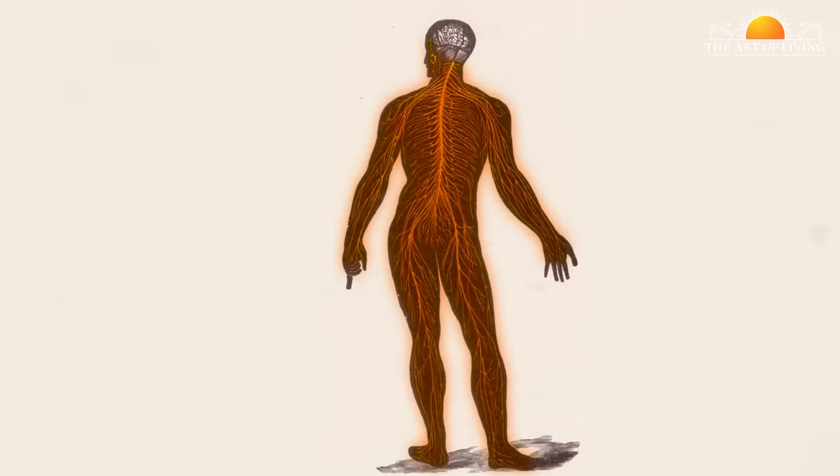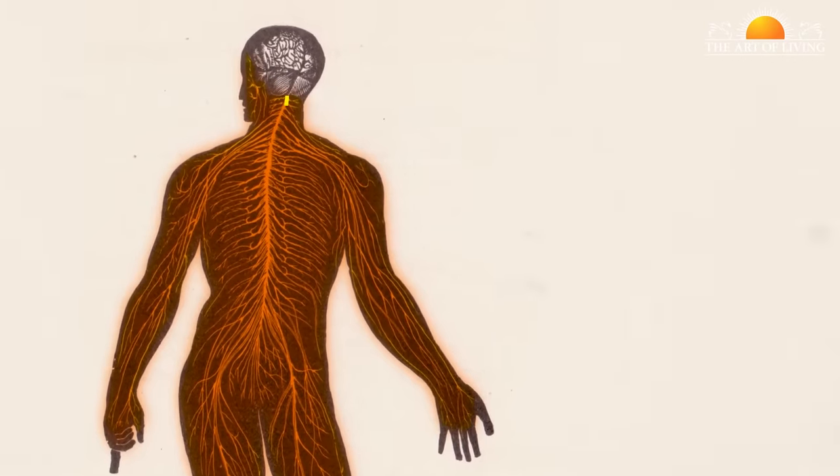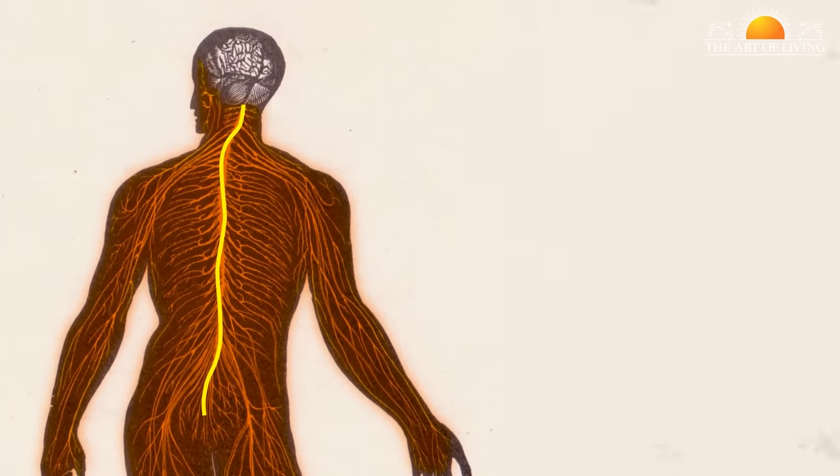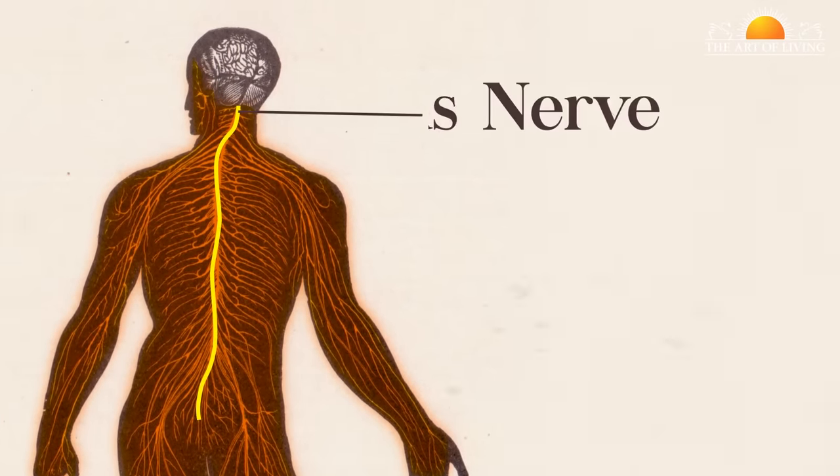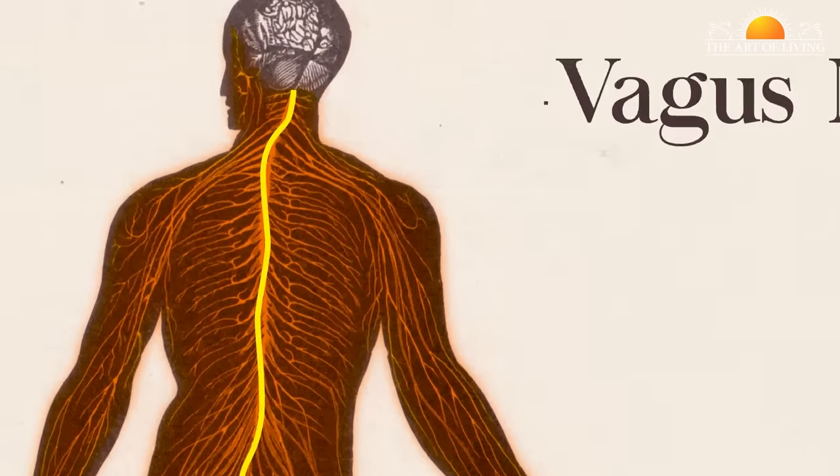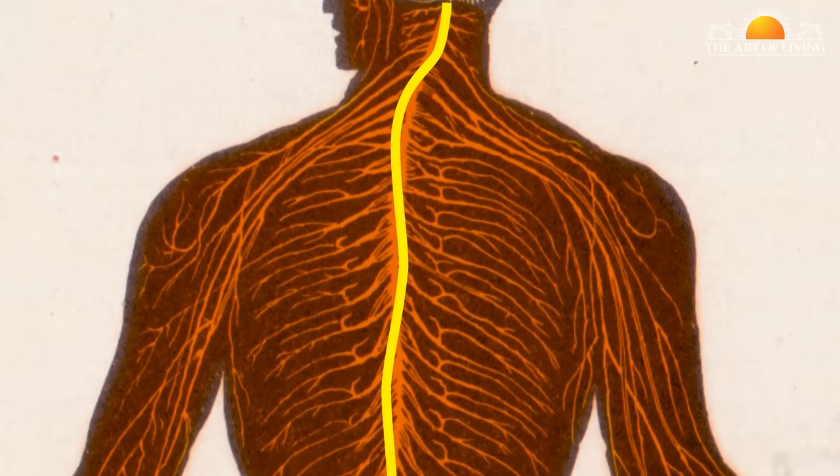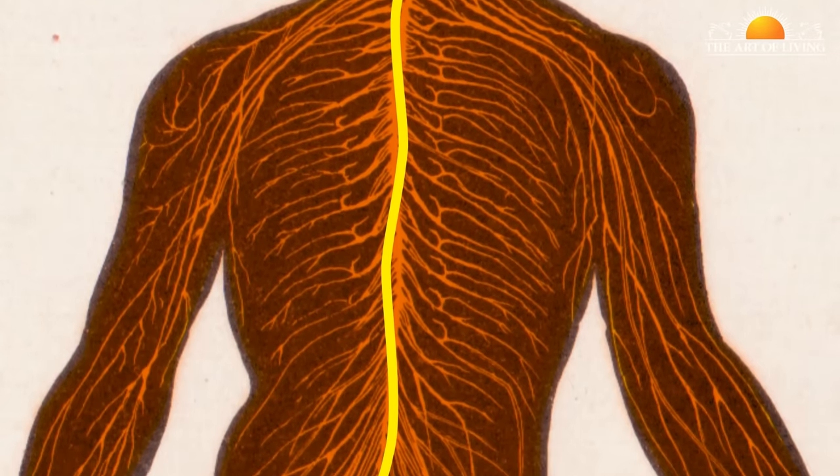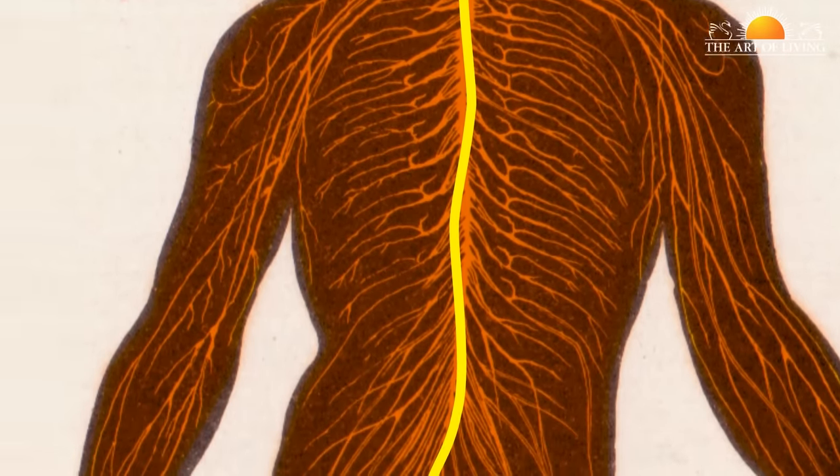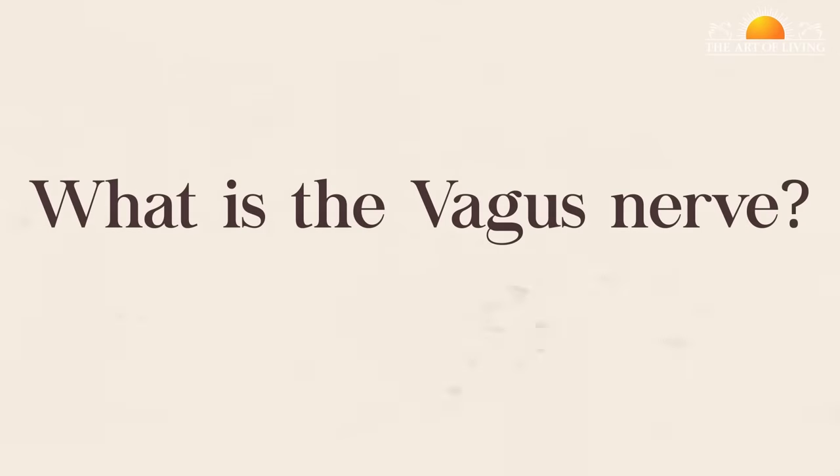One of the most important command centers for bi-directional communication between the brain and body is the vagus nerve. A nerve probably 99% of the population never heard of nor have a clue of its location. So what is the vagus nerve?